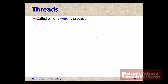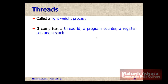A Thread is basically a lightweight process. As a single process is executing for a single task, a thread may be part of a process and execute a part of that process — hence it becomes a lightweight process. Every thread that is generated in a process has a Thread ID, a program counter, a register set, and a stack. Similarly to how processes have a process ID, CPU registers, and memory locations, a thread also comprises a Thread ID, a program counter, a register set, and a stack.